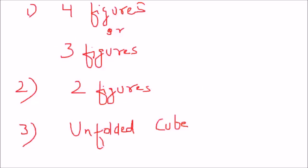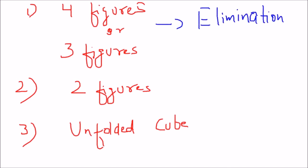There are three types of questions generally asked in the topic of cubes and dices. Type 1: you may be given 4 or 3 figures and asked to find the opposite face of a given face, or there may be two figures and you are asked the same. Type 3: you are given an unfolded cube and asked to find a face. For Type 1 with 3 or 4 figures, we'll use the elimination method. For questions with only two figures, we'll use the orientation method. For the unfolded cube, we'll use a special trick I'll discuss now.